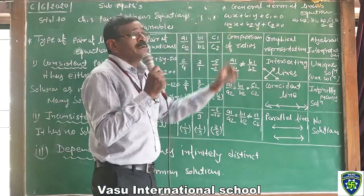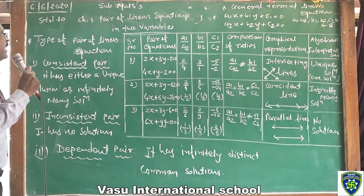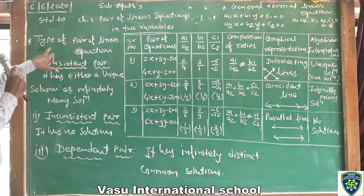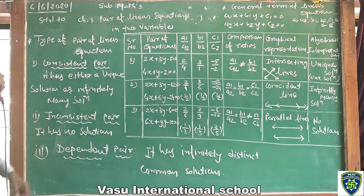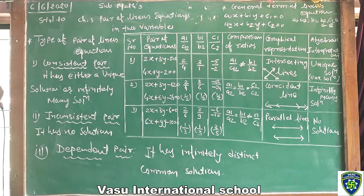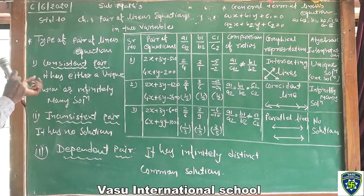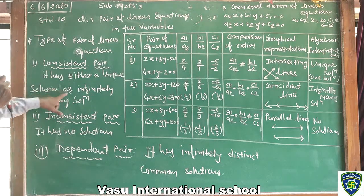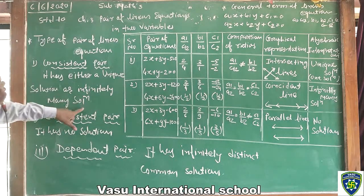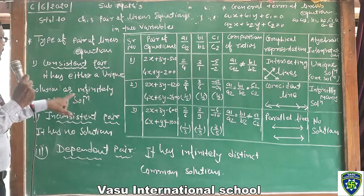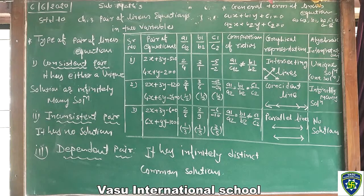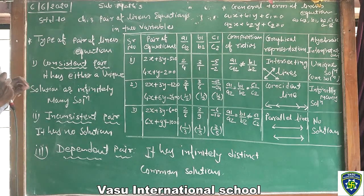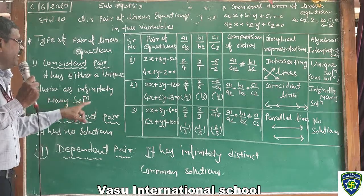And x and y are variables. Now, the types of pair of linear equations. First: Consistent pair — it has either a unique solution or infinitely many solutions. Unique solution means one and only one solution, or infinitely many solutions.